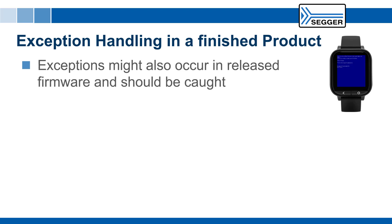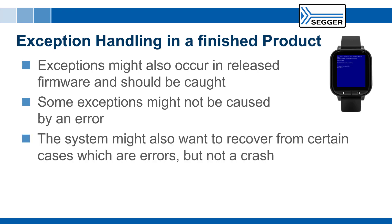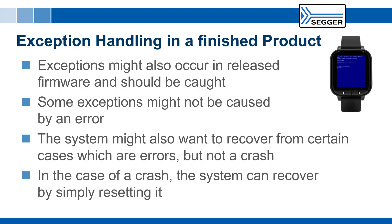Exceptions might also occur in released firmware and should be caught. Some exceptions might not be caused by an error — for example, executing a breakpoint instruction when no debugger is connected causes a hard fault. From these exceptions, the firmware can simply return and continue program execution. The system might also want to recover from certain cases which are errors but not a crash. In the exception handler, the error reason can be analyzed and the system can recover, for example by terminating the task which caused the error. In the case of a crash, the system can recover by simply resetting it. In more advanced scenarios, a crash dump could be generated before the reset to be sent or saved on reboot.